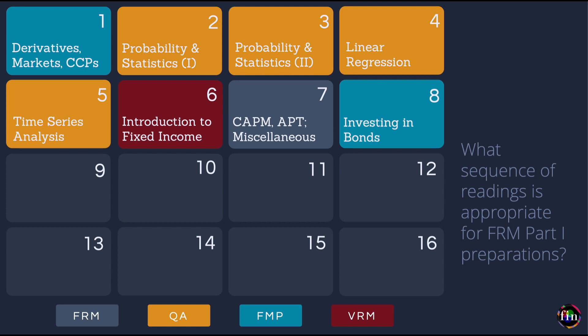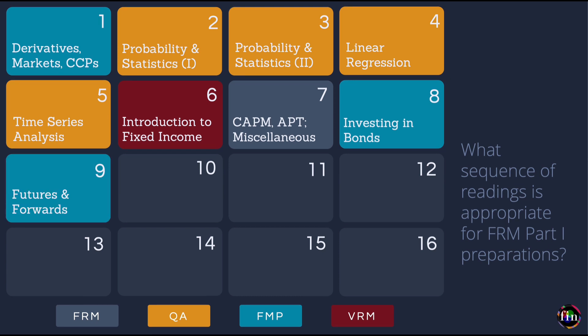In Lesson 9 we have four chapters from the FMP book, all focused on futures and forwards. We begin with pricing of forwards and futures, then look at hedging strategies using futures, commodity forwards and futures, and finally foreign exchange risk.